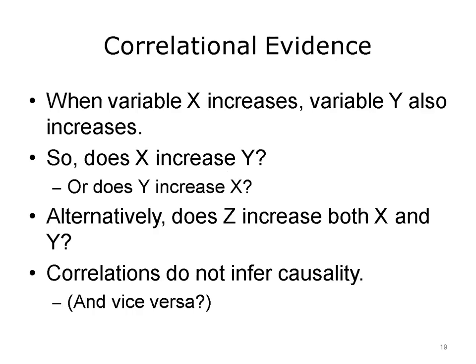Correlational evidence is important to understand because we're often trying to demonstrate causality — we want to see that when outcome Y increases, input X also increases. For example, if we increase the amount of exercise students are getting (X), we would hope to see their cardiovascular health (Y) also increase. Confounding is where some other feature may actually be influencing the outcome of interest. For example, if we change students' diet and implement an exercise plan, it's not clear which one has the greater effect on BMI. Correlations do not necessarily infer causality.